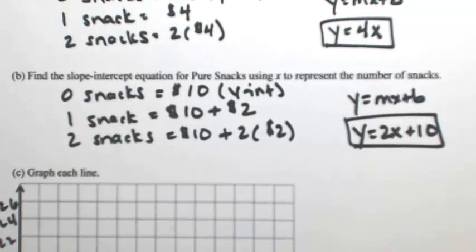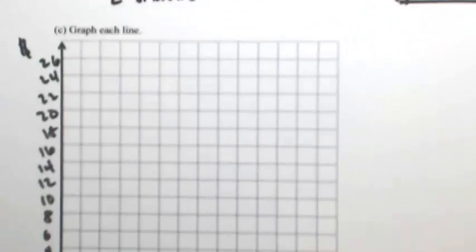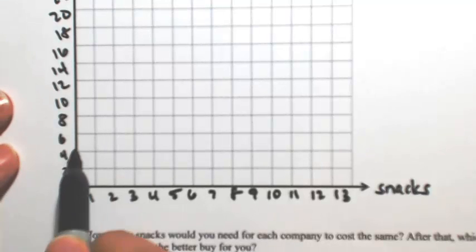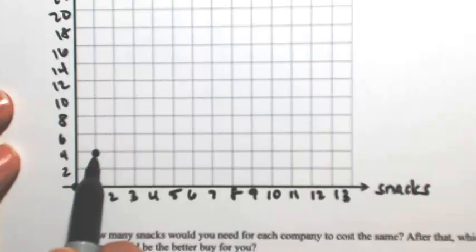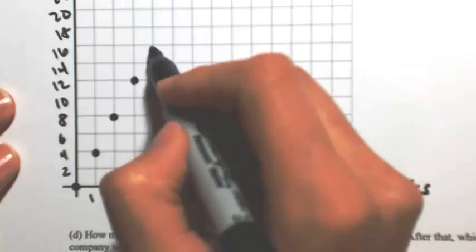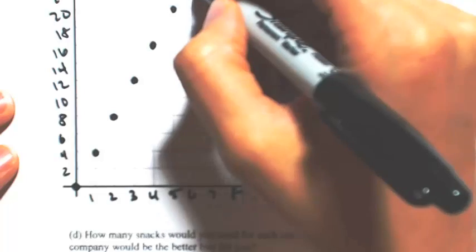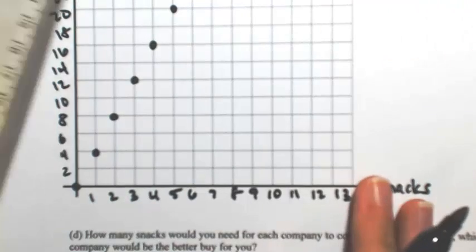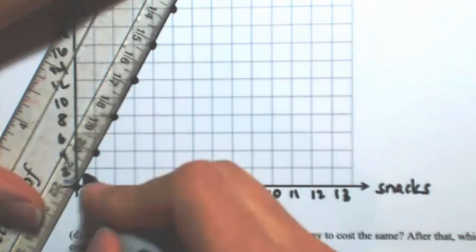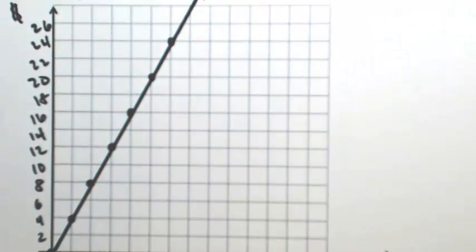For the first line, we have a y-intercept of 0, and the slope is 4. So starting at 0, I'm going to go up 4 over 1. So 1 snack costs you 4. 2 snacks costs you 8. 3 costs 12. 4 costs 16. 5 is 20. 6 is 24. So there's our line. I'm not going to go past the 0, though, because you can't have a negative number of snacks. This is for Nature Goodies.